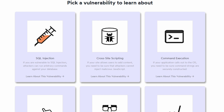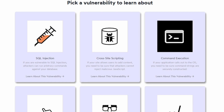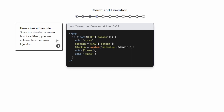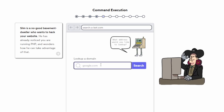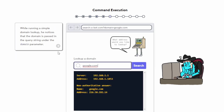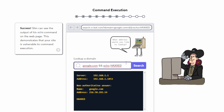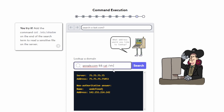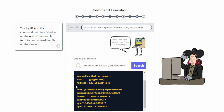Let's dive into command injection. This vulnerability occurs when an attacker can execute arbitrary commands on a host operating system via a vulnerable application. Imagine an attacker gaining control over your server by injecting malicious commands through a web form or URL parameter. Hacksplaining's interactive lessons will show you how to identify and prevent command injection attacks, ensuring your server remains secure.